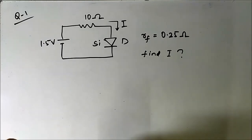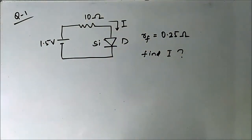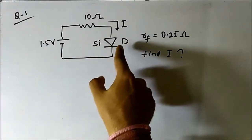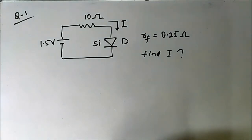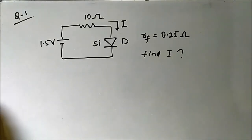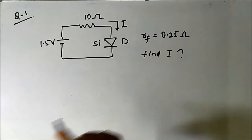We'll start with some simple questions. This first circuit asks us to find the value of current i. It has a 1.5 volt DC source, a 10 ohm resistor, and a silicon diode connected with the arrowhead pointing downwards — p-type on one end and n-type on the other.